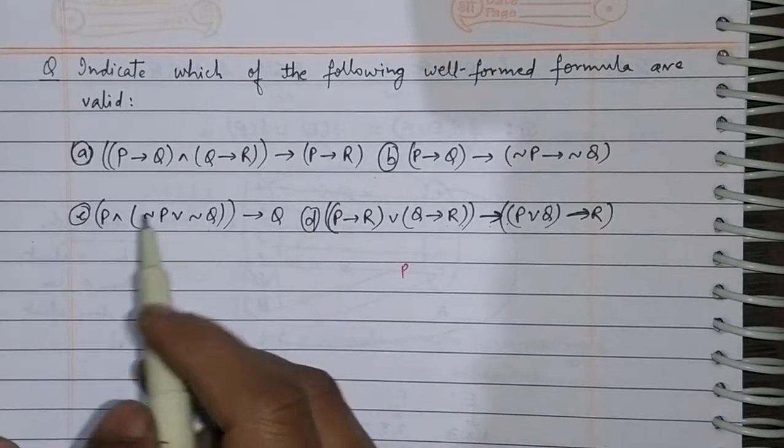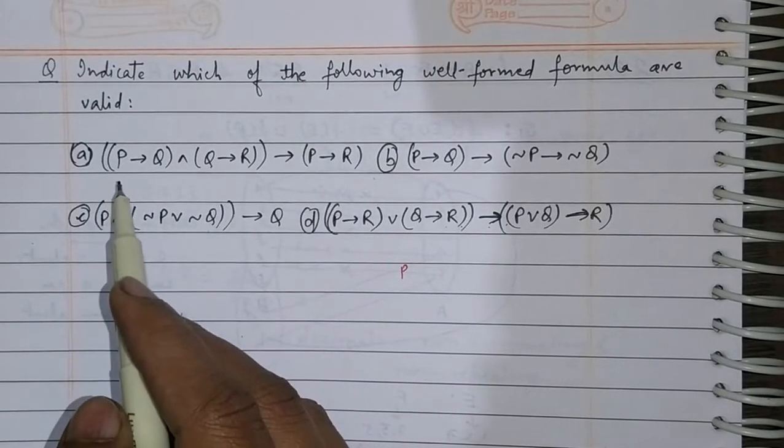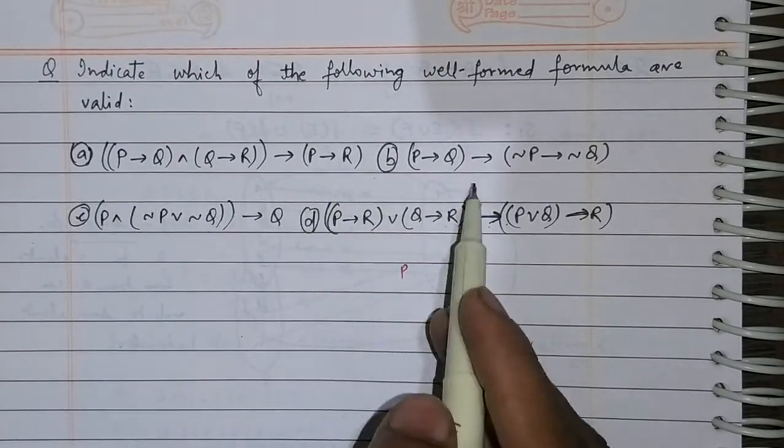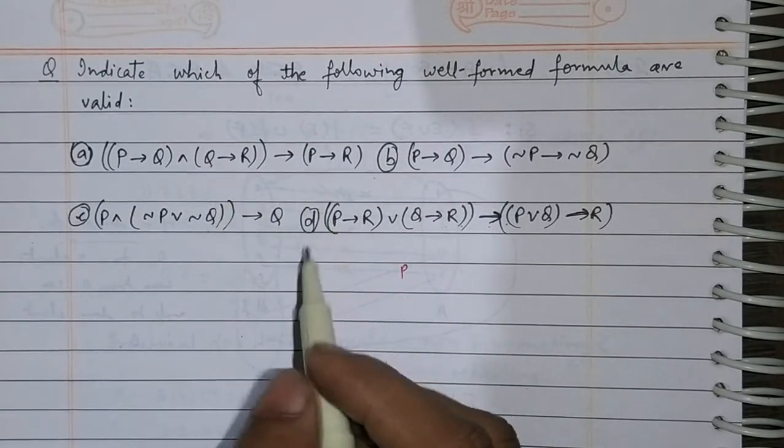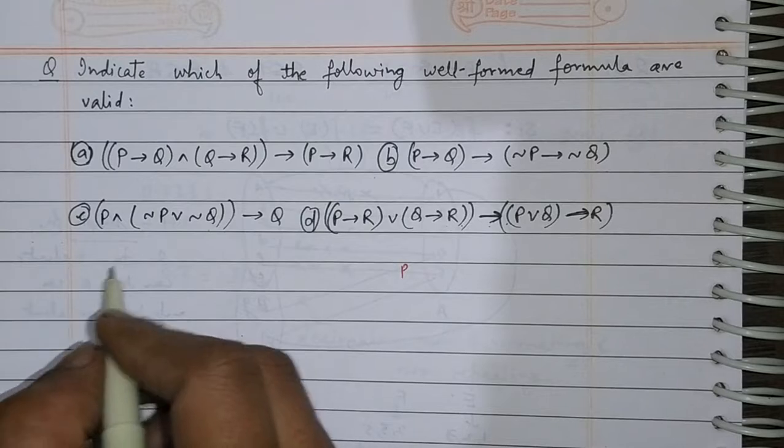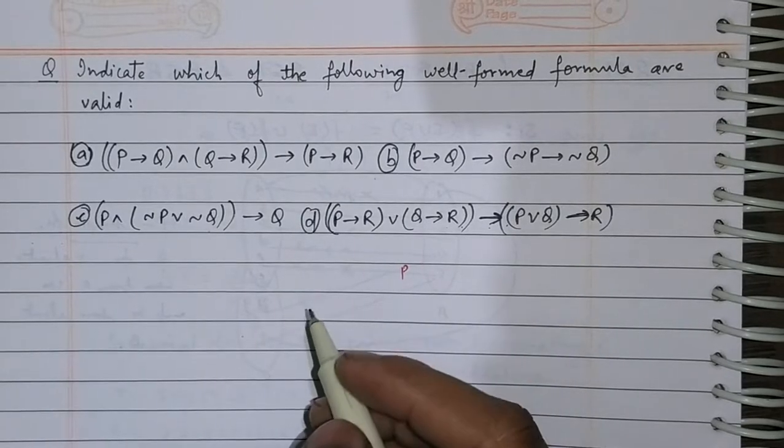In the given question, we have to find which of the four logical links are valid. Let's check one by one.